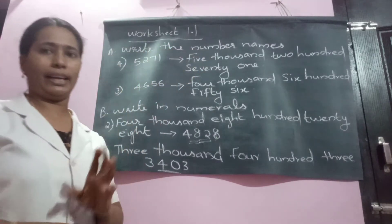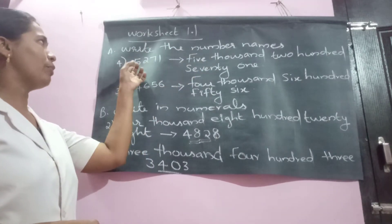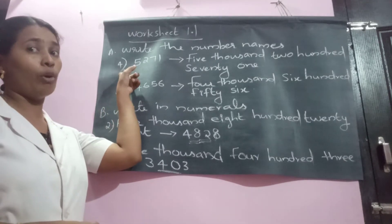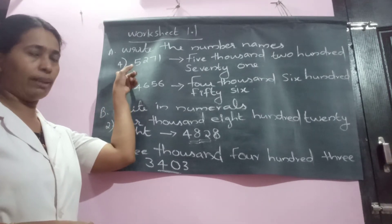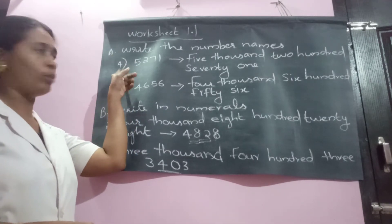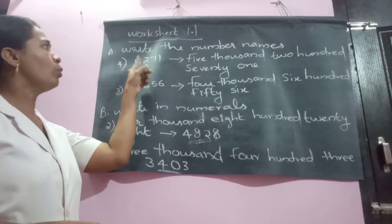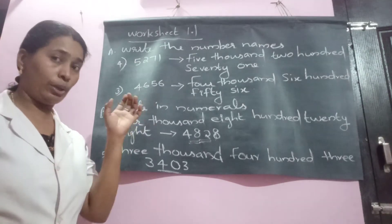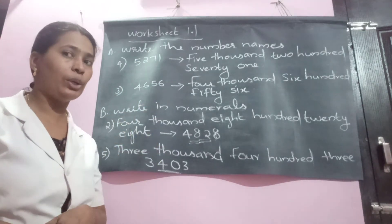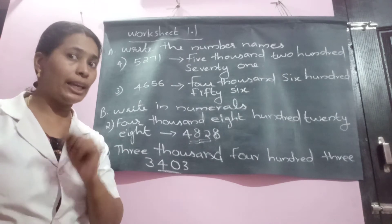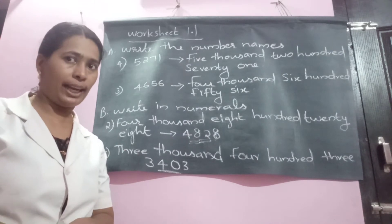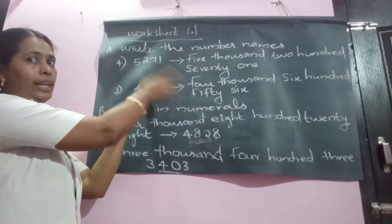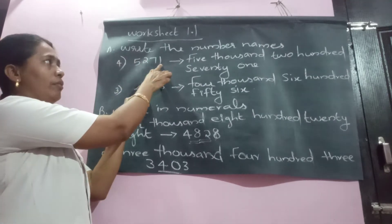Section A: write the number names. The teacher is answering question number 4 from section A. The number given is 5, 2, 7, 1. In order to write or read a number, we need to know the place values. Count from your right hand side to the left hand side — ones, tens, hundreds, thousands.